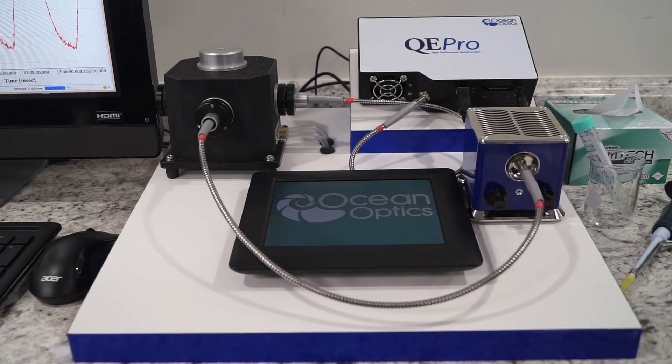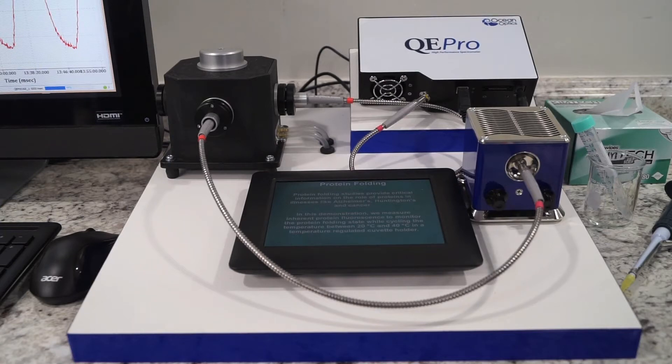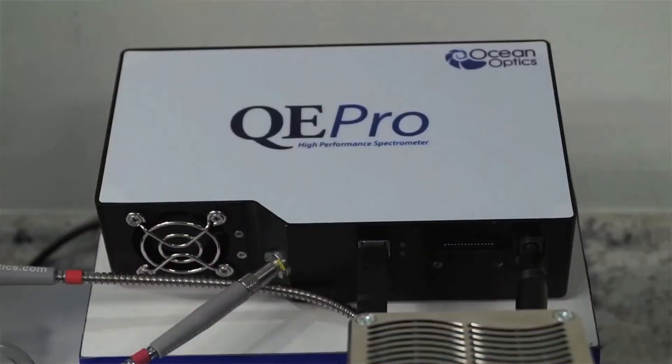The QE Pro is a great choice for any life science laboratory. It has interchangeable slits, which enables researchers to reconfigure their spectrometer as needed to look at different light levels and different resolutions. It also has a high-sensitivity back thinned cool detector to enable the detection of low signal levels.